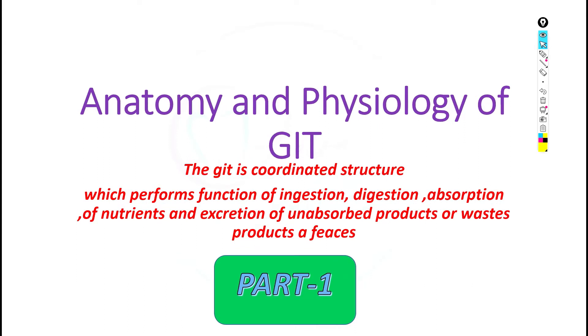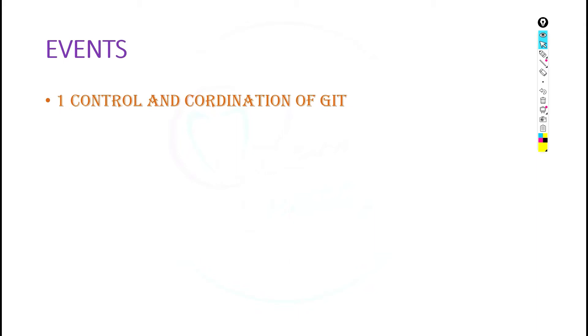Starting with the definition: the GIT is a coordinating structure which performs the functions of digestion, ingestion, absorption of nutrients, and excretion of unabsorbed products as waste products or feces.